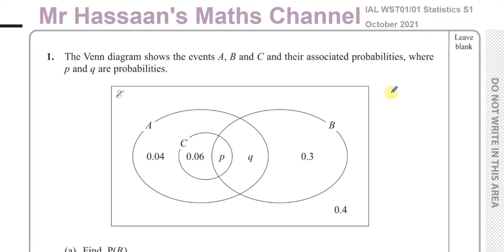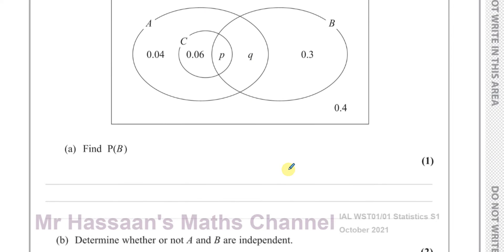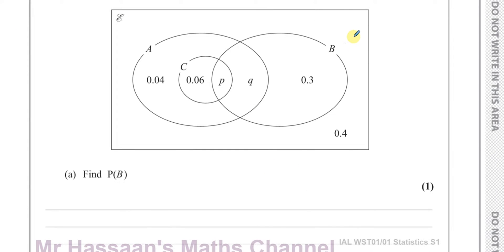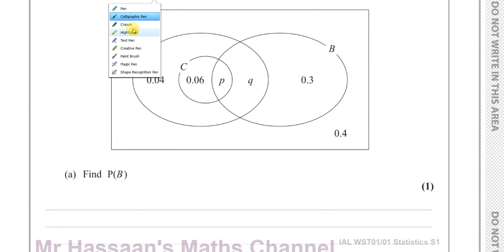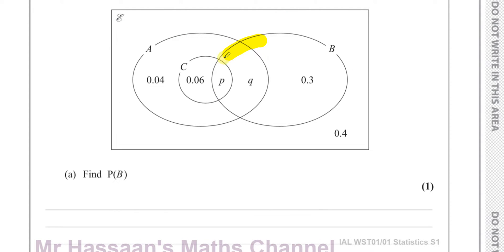It says the Venn diagram shows events A, B, and C and their associated probabilities where P and Q are probabilities. Find the probability of B. So we need to find the probability of event B. The event B is this region over here.